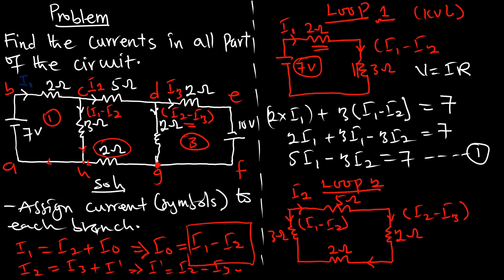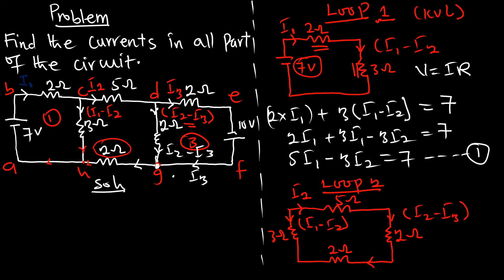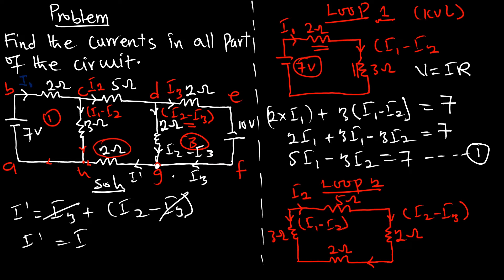At this junction, the current i3 is coming in and the current i2 minus i3 is also coming in, so the leaving current i-prime equals i3 plus (i2 minus i3), and the i3 terms cancel, leaving i-prime equal to i2. So the current passing through this two-ohm resistor is i2.